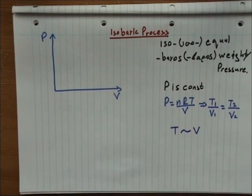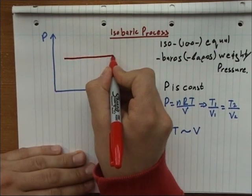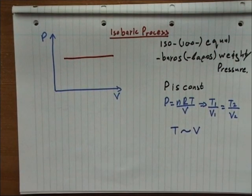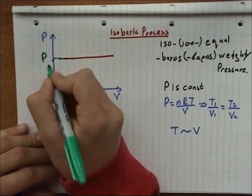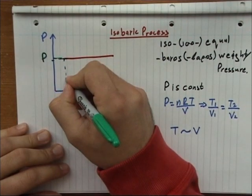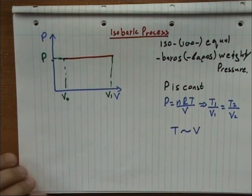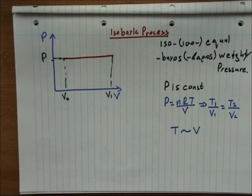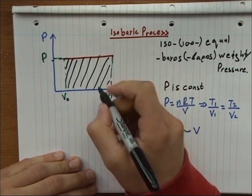If we see the process on the PV diagram, it is simply a straight horizontal line, leading to a pressure like this, with P, V0, and V1. Once again, the work done by the gas is this area.